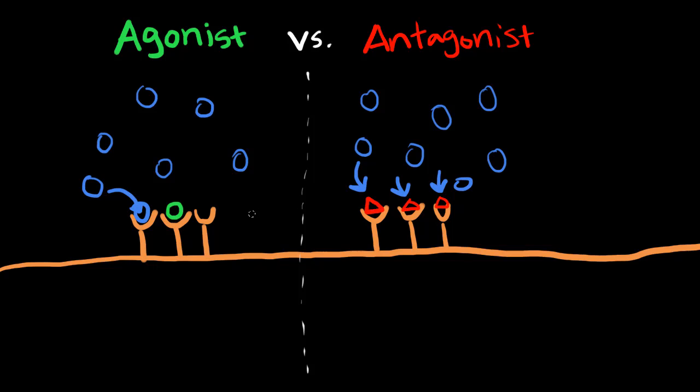And so that's the main difference between agonist and antagonist. Agonists are going to activate these receptors just along with the neurotransmitters. And antagonists are going to block the action of a regular neurotransmitter.